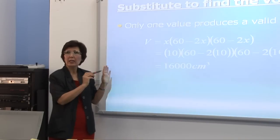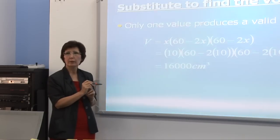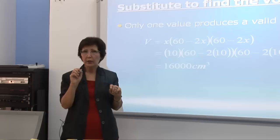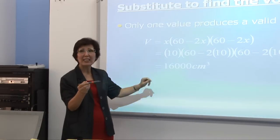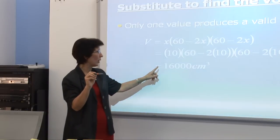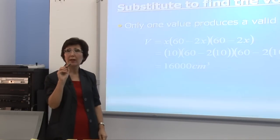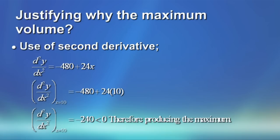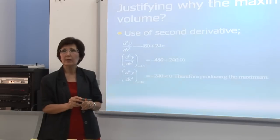Now, how do we know, how can we justify that this is really the maximum value? Again, going back to calculus, we can use the second derivative to justify our answer. We know if the second derivative for the given value of x is negative, it indicates that this value of x is providing us with the maximum value. Now, if we go to the next one, we can see the second derivative is minus 480 plus 24x. And if I substitute the value of 10 within this function, you will end up with minus 240, which is a negative value, indicating that the value x equals 10 is providing us with the maximum value for function v.